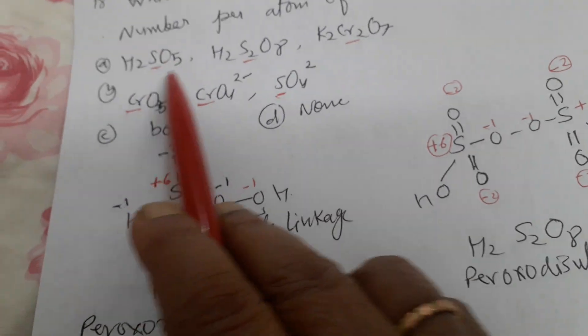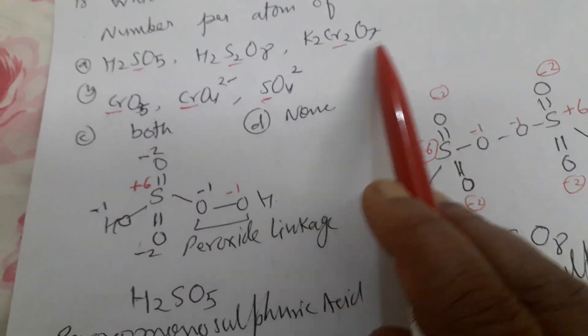Non-oxidation state of given acids: H₂S₂O₄, H₂S₂O₈, and K₂Cr₂O₇.